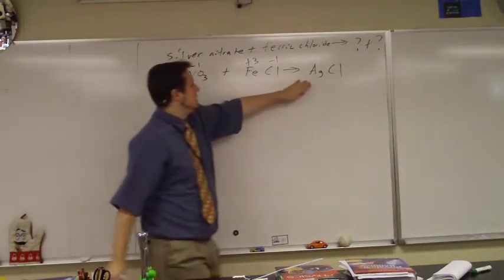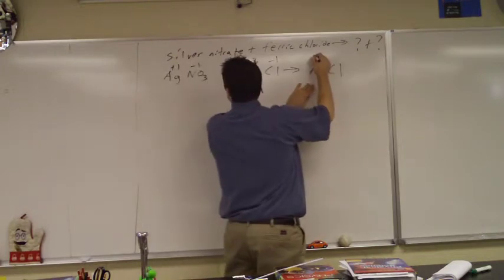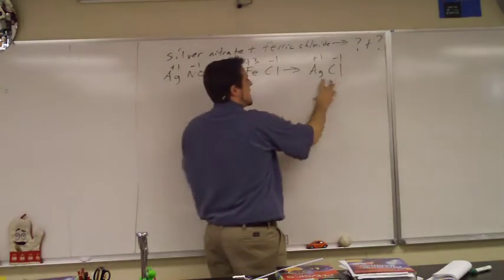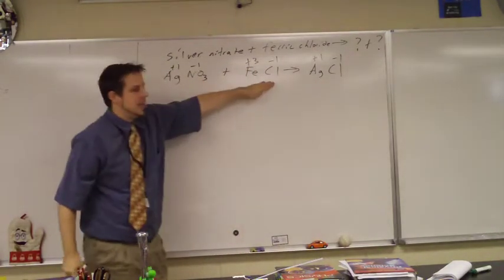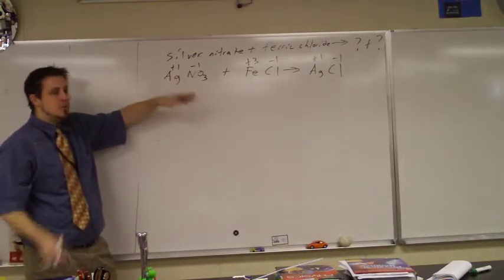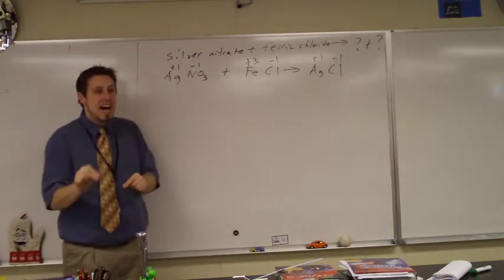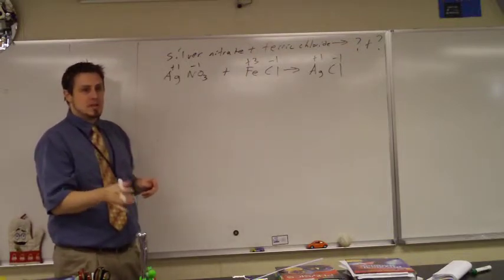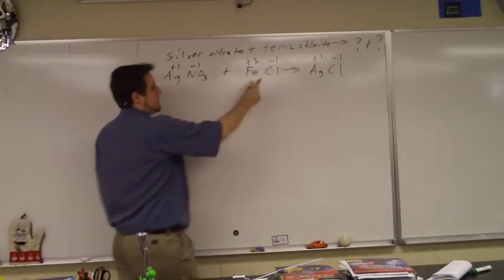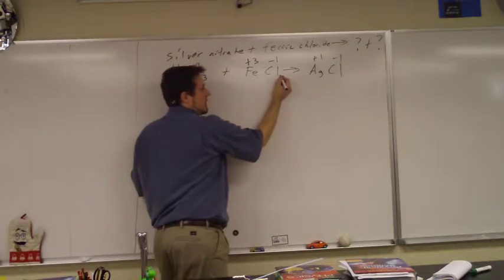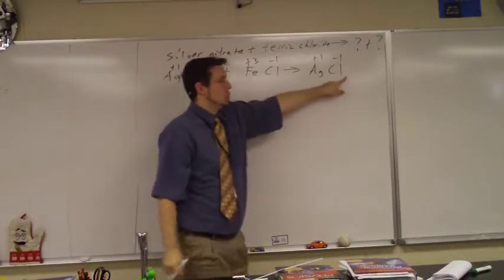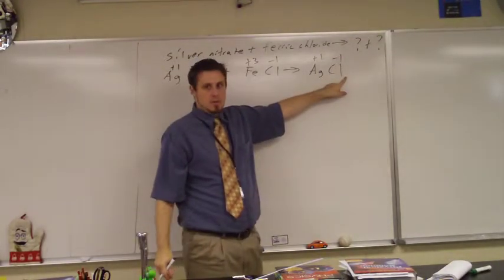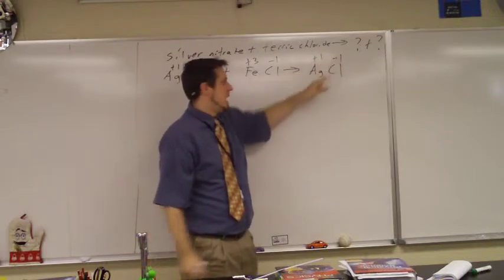Now over here, you still have to write the plus 1, minus 1. The subscripts over here do not depend on the subscripts over here. You've got to do the cross and drop on both sides of the equation. So you can see that it doesn't matter. Like, for instance, is there supposed to be a 3 here? Yeah. Does that mean you put a 3 here? No. Because these are both 1s.